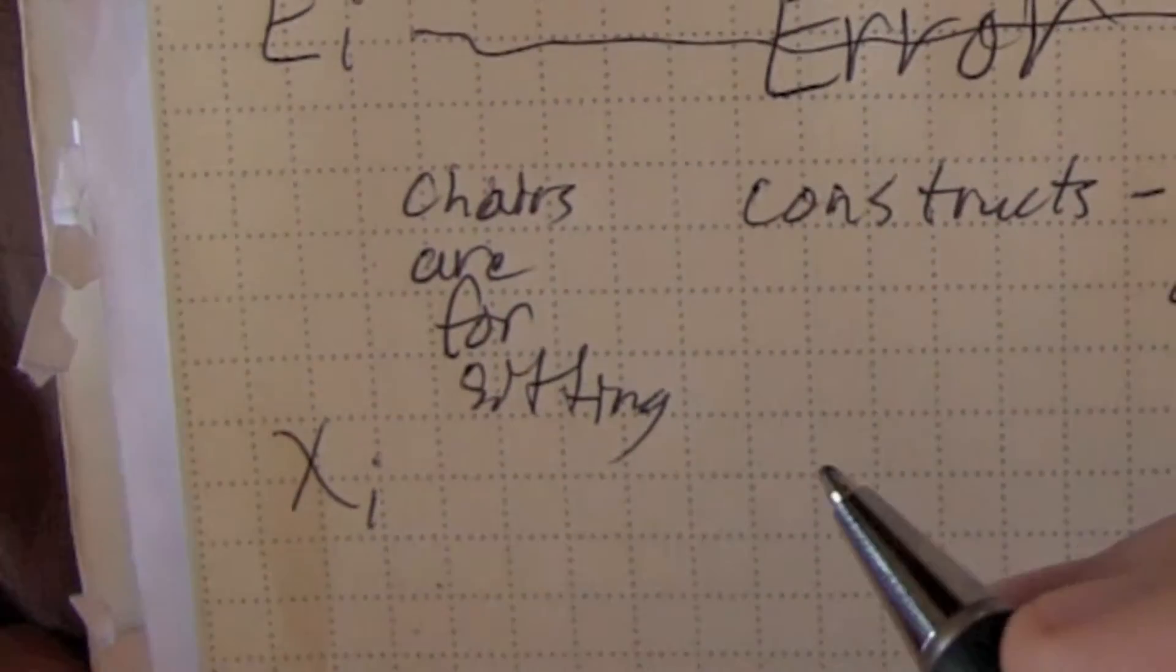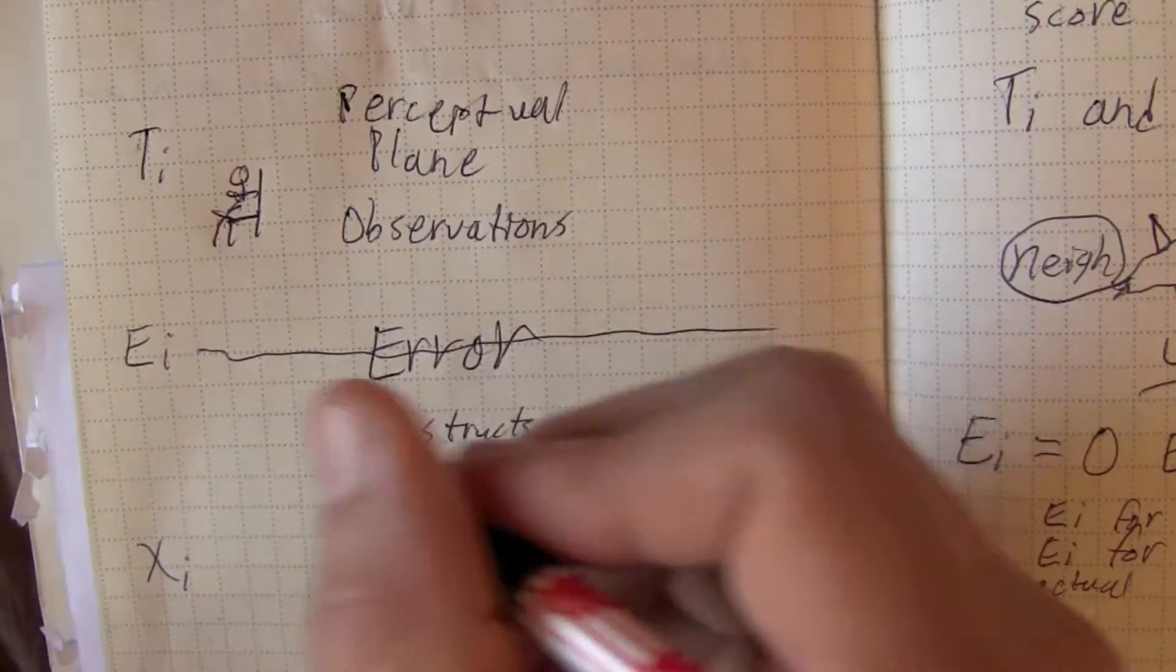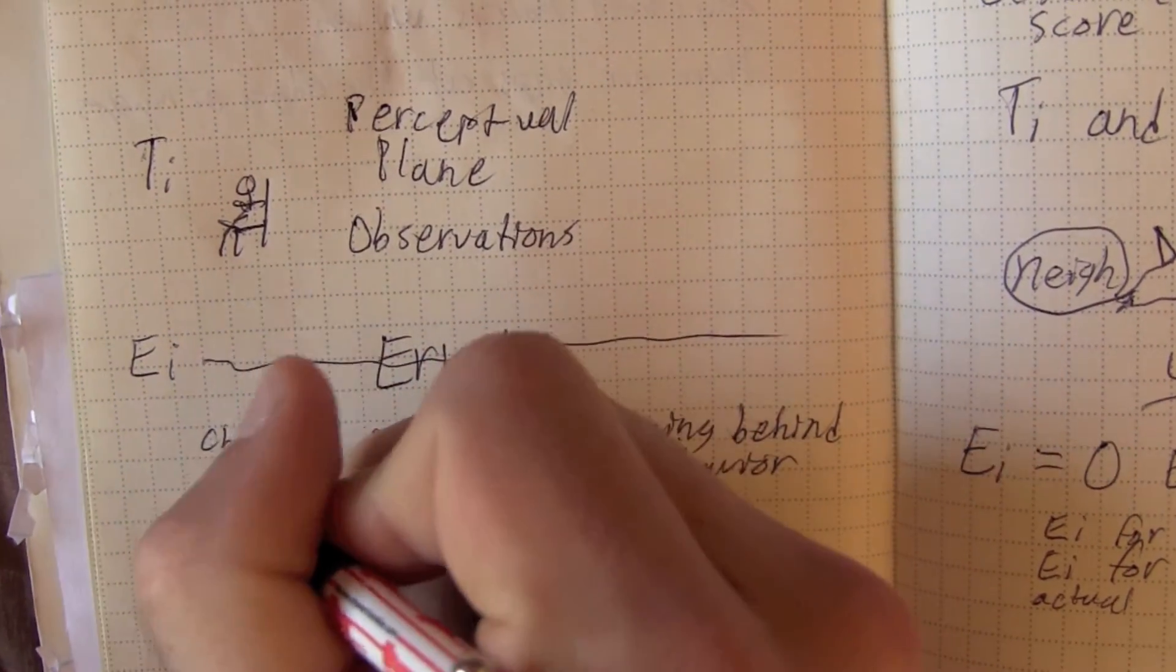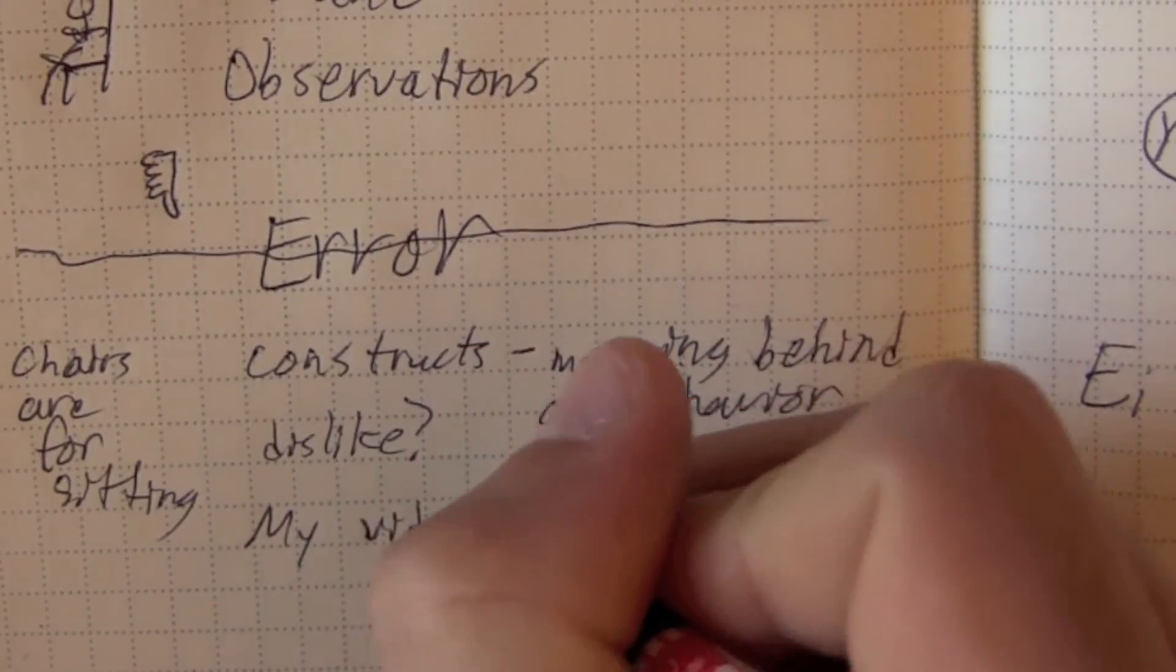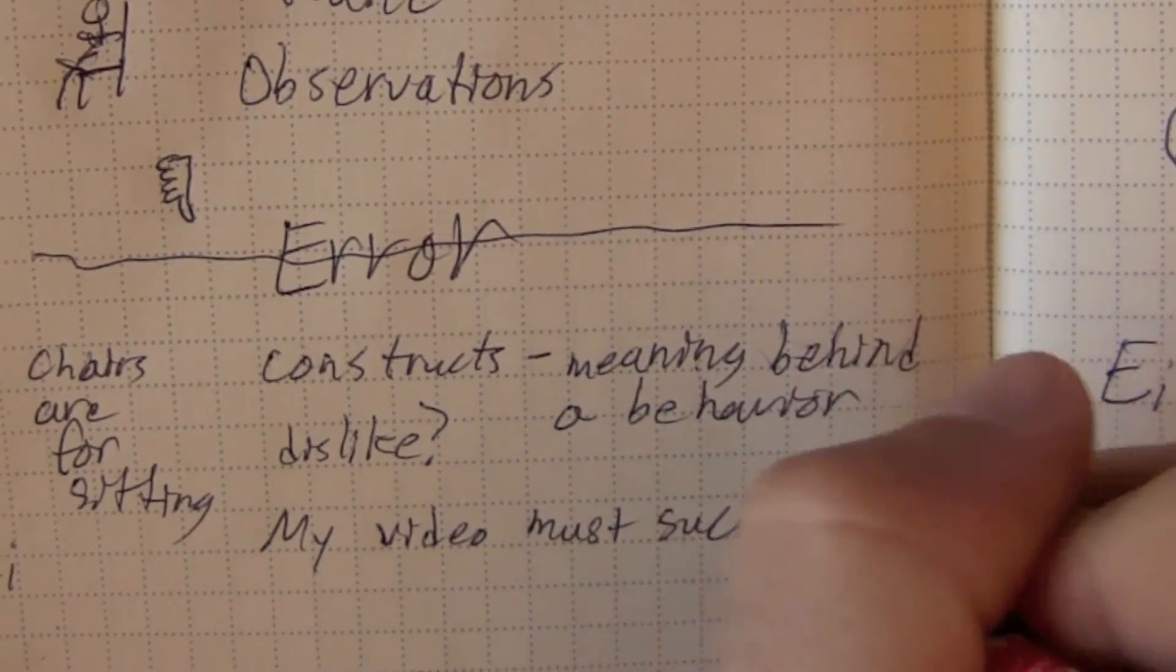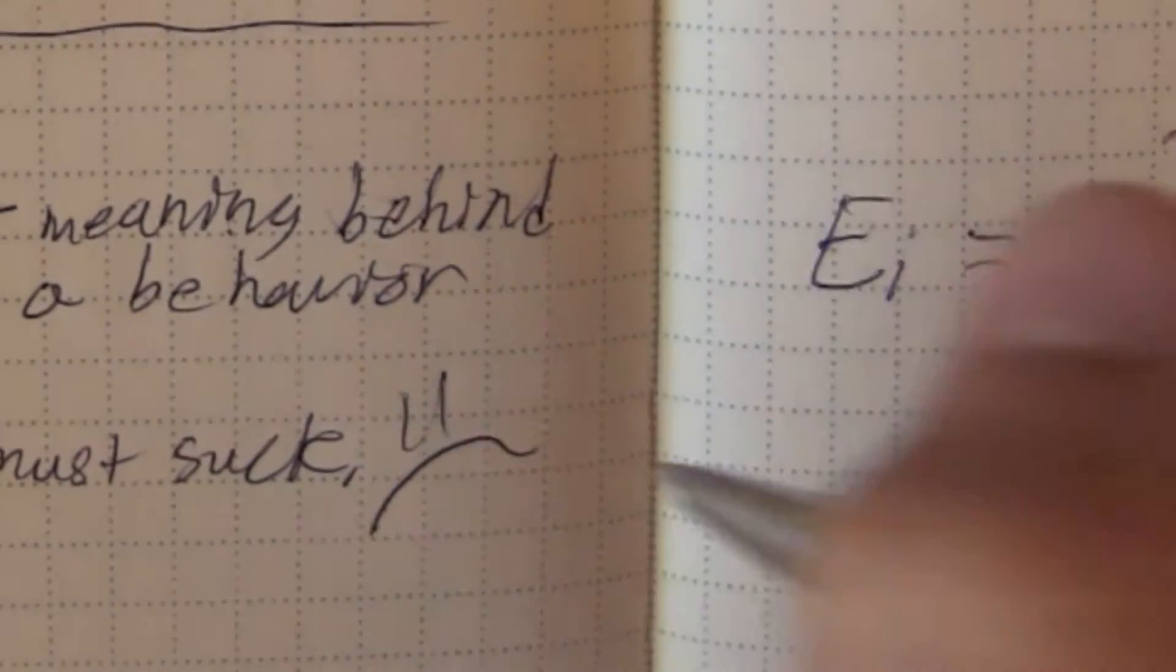Now, chairs aren't necessarily for sitting. They could be used for other things, like hats, but in this case, they're used for sitting. Also, if there's a thumbs down, that may mean that someone disliked your video, and it might suck. But it could also mean something else.